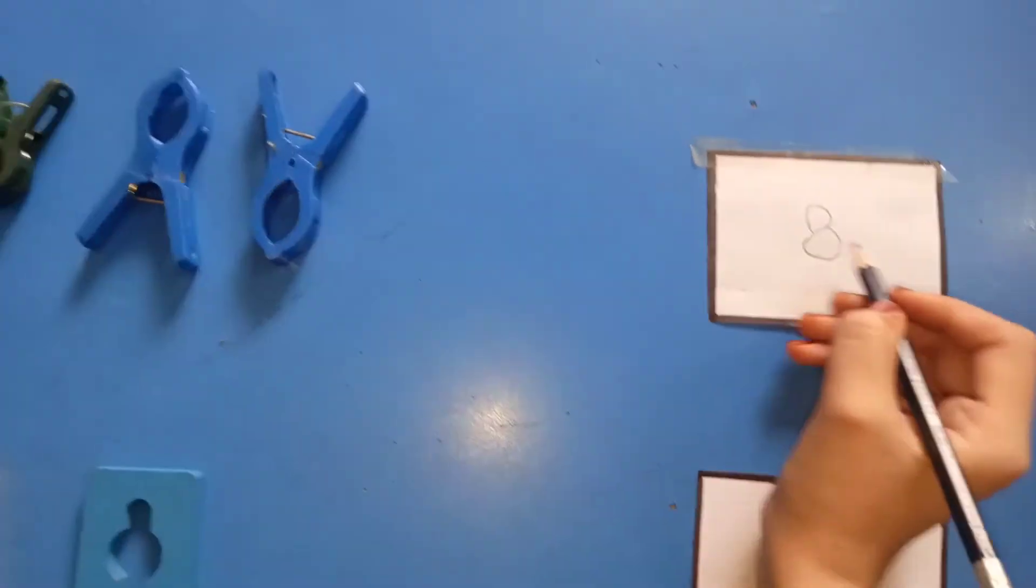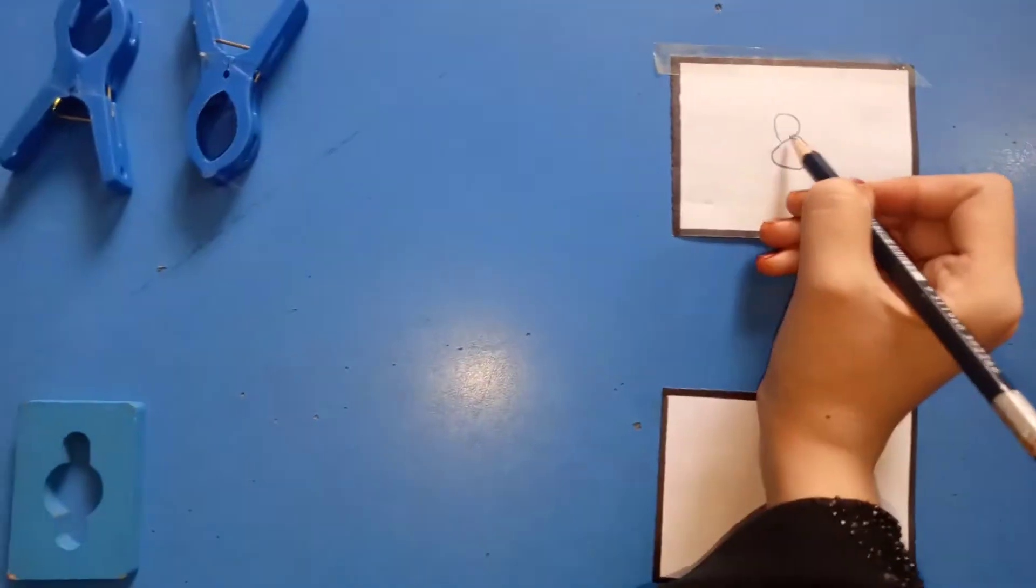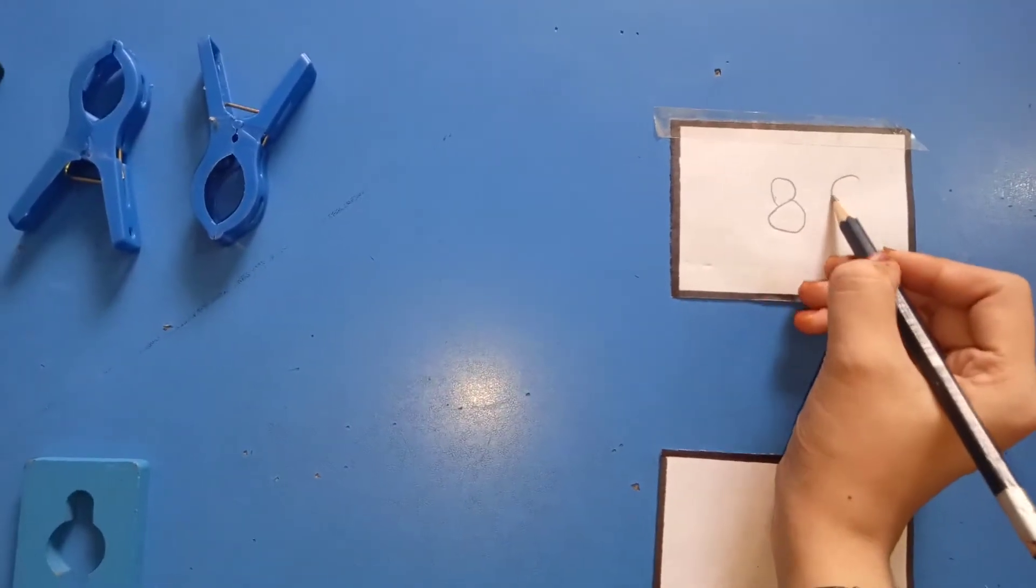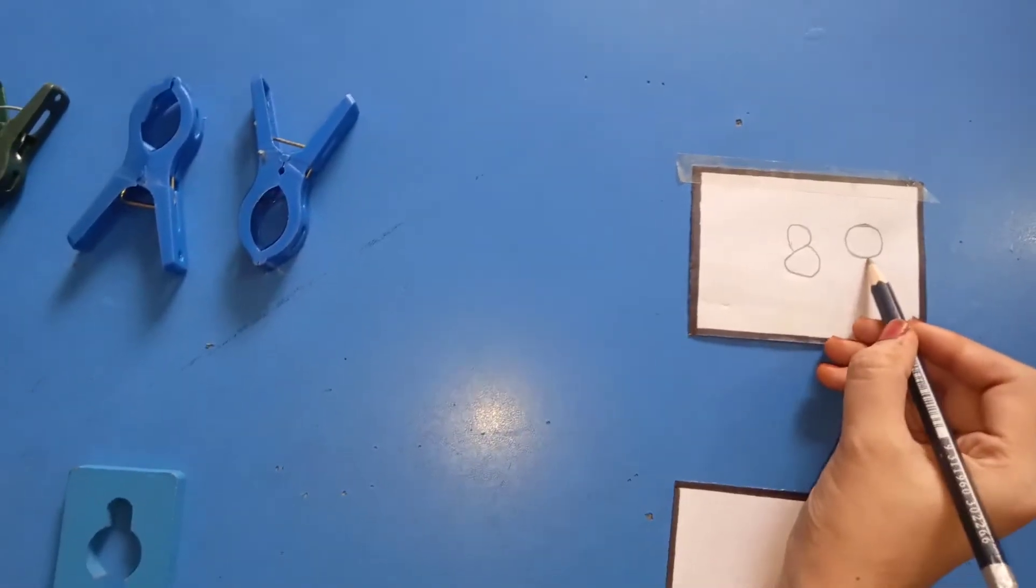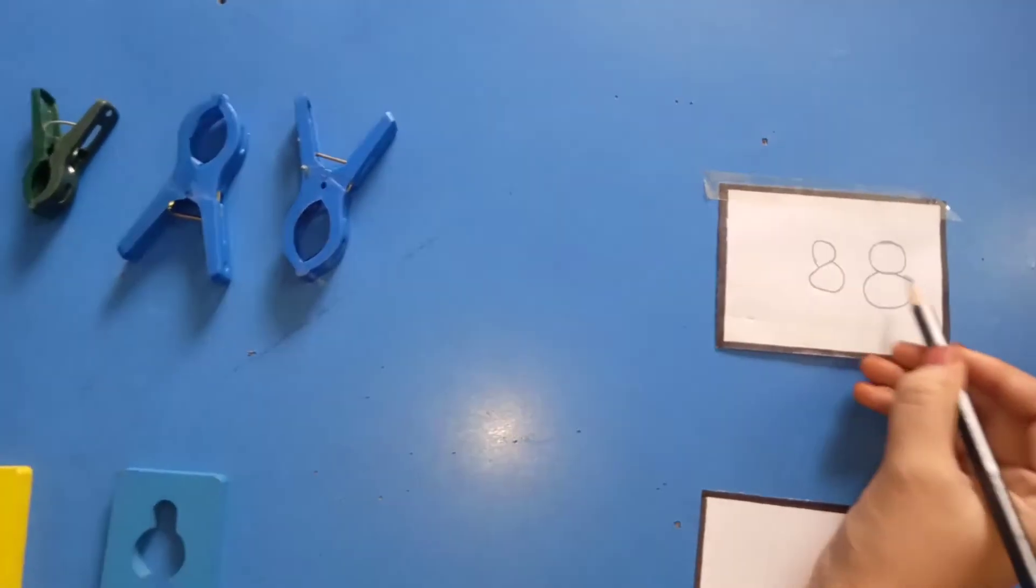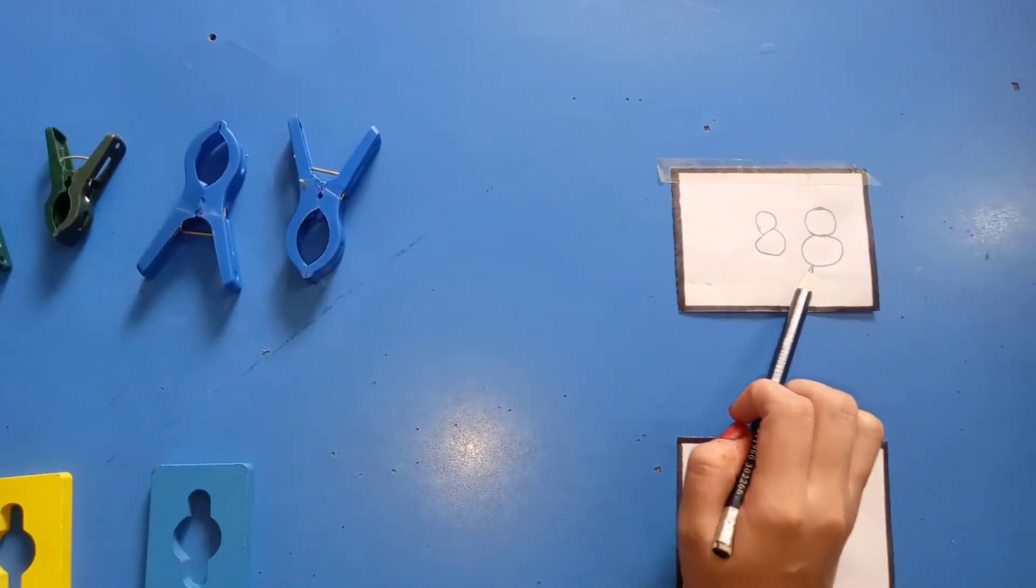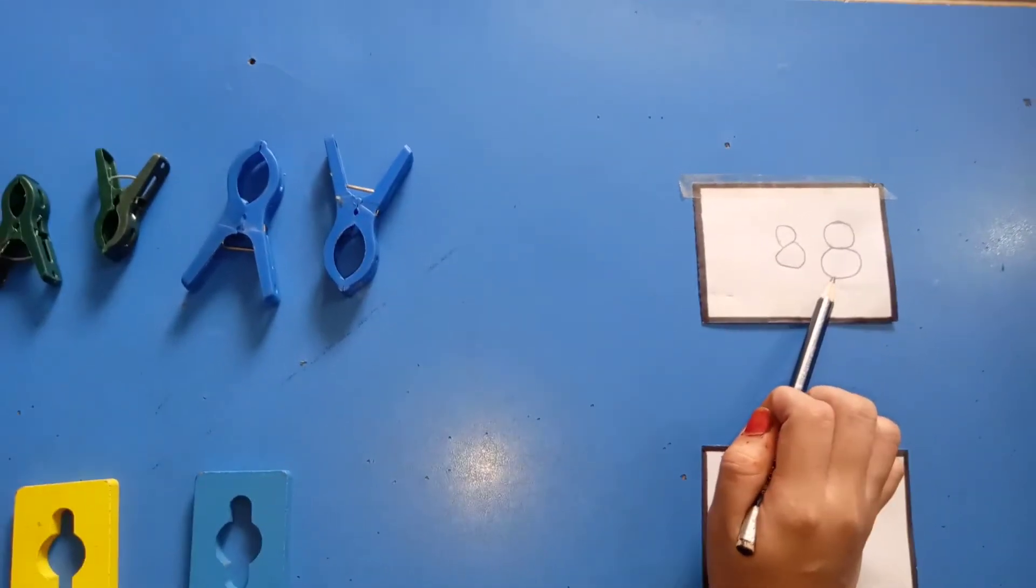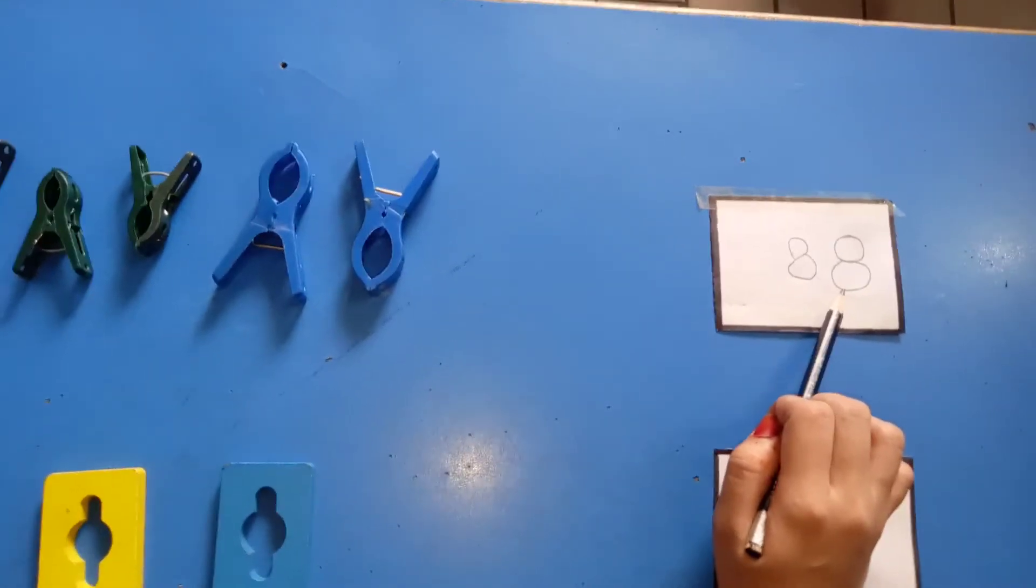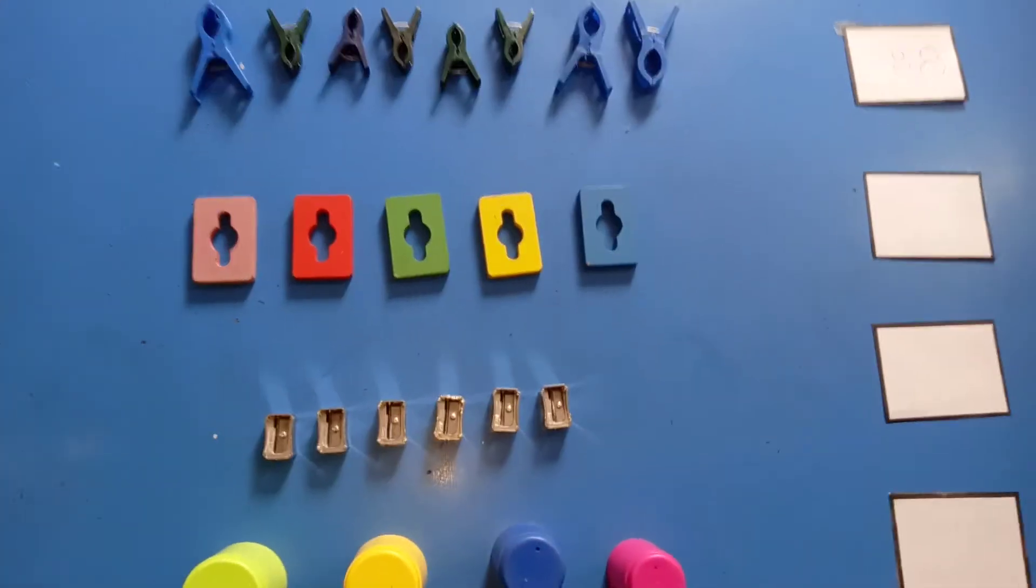Beattah, ye to teacher ne likha hai. Aap jub eight likhenge, aap ne simple make a circle and again circle. It's an eight. Dounou hi eight hai. Aap dounou likh sakti hai. Lekin aap ke liye to jyadha easy yehi wala hooga. Aap yehi wala eight bana hai. Okay, Munna.